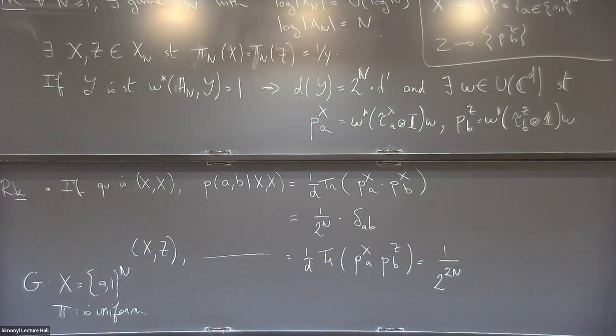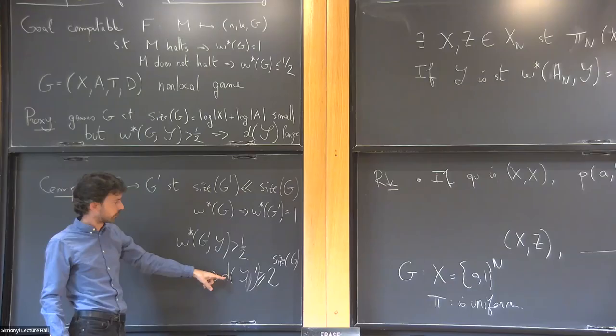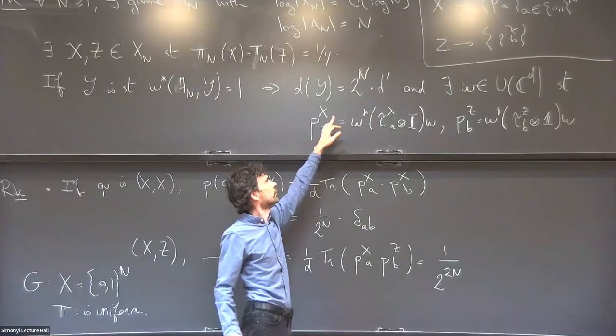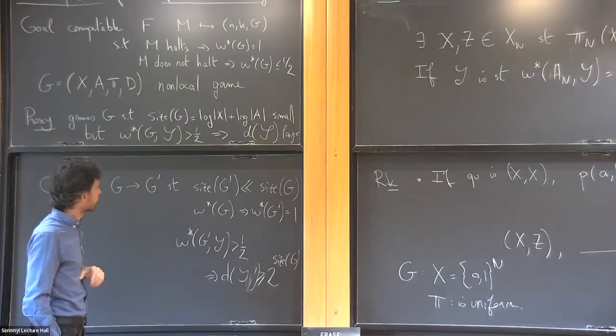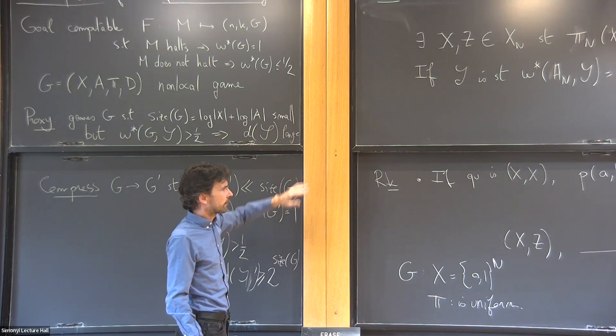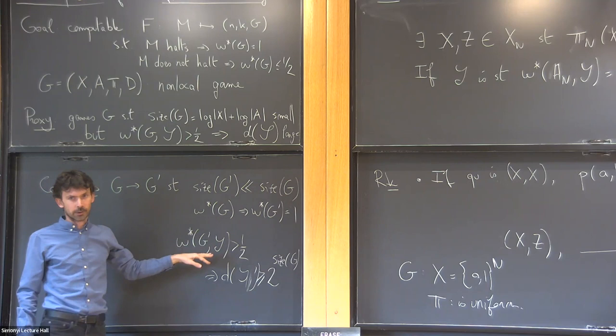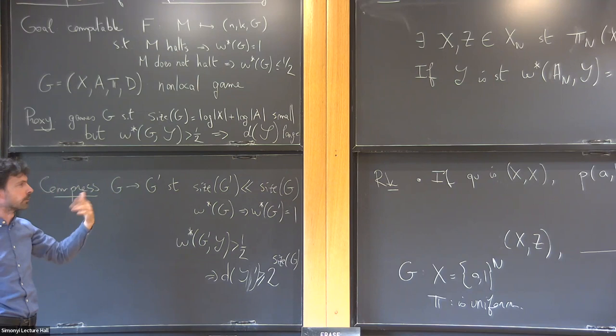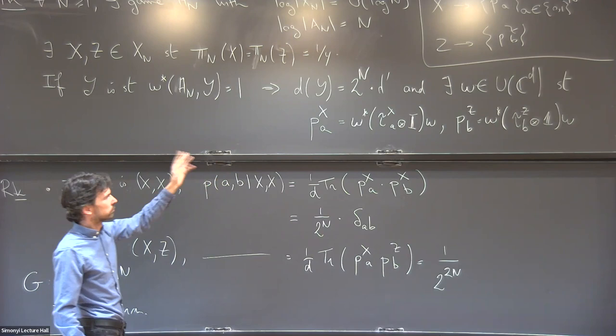There was a requirement on the dimension of strategies that succeed, and that requirement is met here. The dimension of any successful strategy is what we wanted. One thing we didn't get is that I'm only talking about success probability one — in fact I want the conclusions to hold in some relaxed form even when success probability is bigger than half. Approximate versions of the statements written here hold; I just didn't formulate them because it becomes more technically involved.